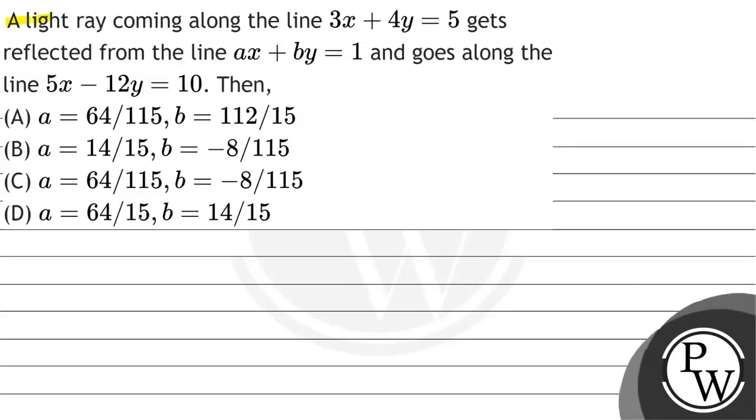Let us read the question. A light ray coming along the line 3x plus 4y equal 5 gets reflected from the line ax plus by equal 1 and goes along the line 5x minus 12y equal 10.